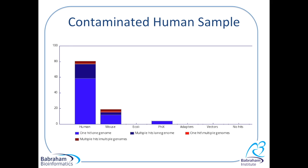You can also see in the fourth column there are a small number of reads which map only to the Phi X genome. This could be contamination, however it is quite common when performing a sequencing experiment to add a small quantity of Phi X. This actually, in some instances, improves the base calling of the sequencing machine. And I suspect that is what has happened in this case.